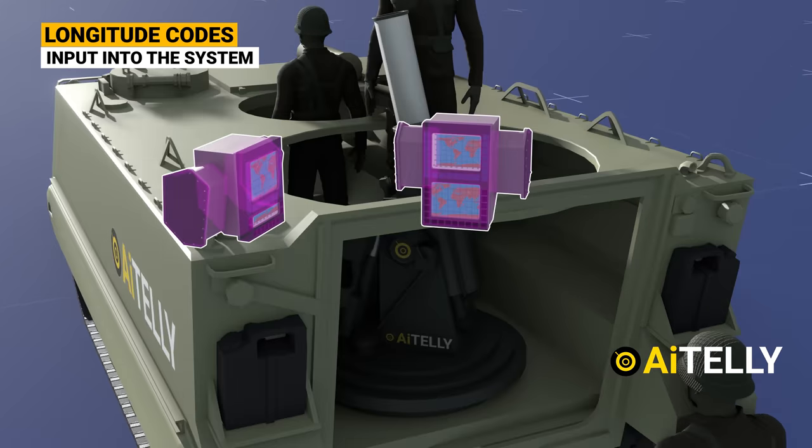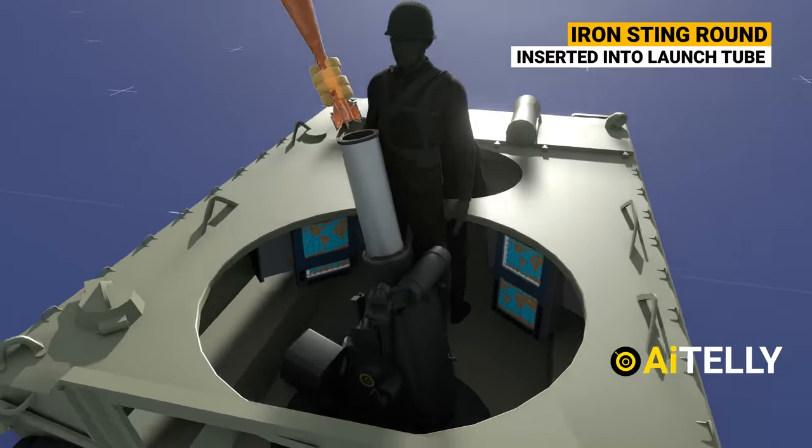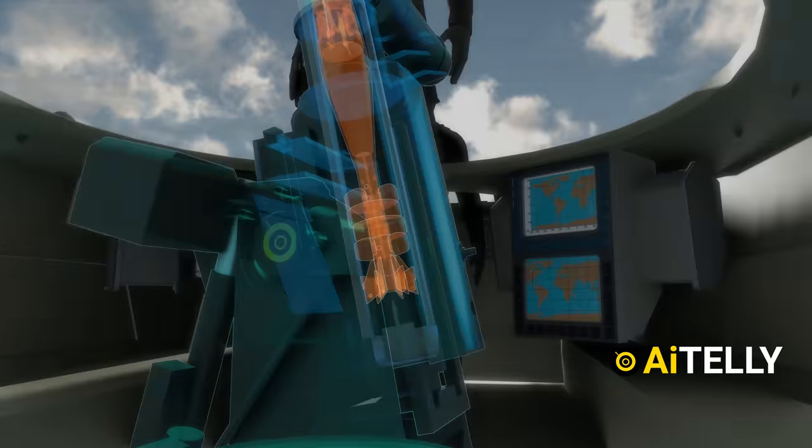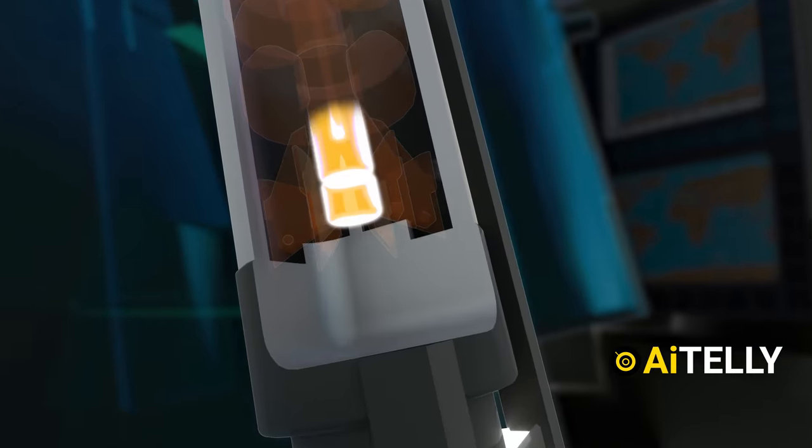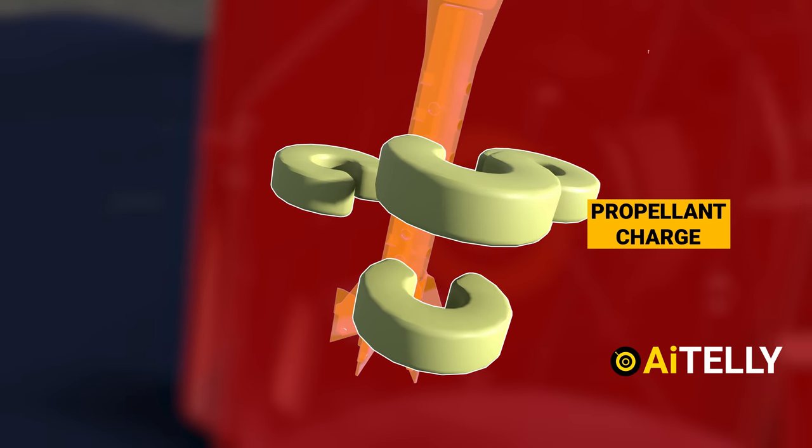The soldier enters precise longitude codes and loads the Iron Sting round into the launcher. When the round strikes the firing pin, it activates the detonators, subsequently triggering the ring propellant charge.